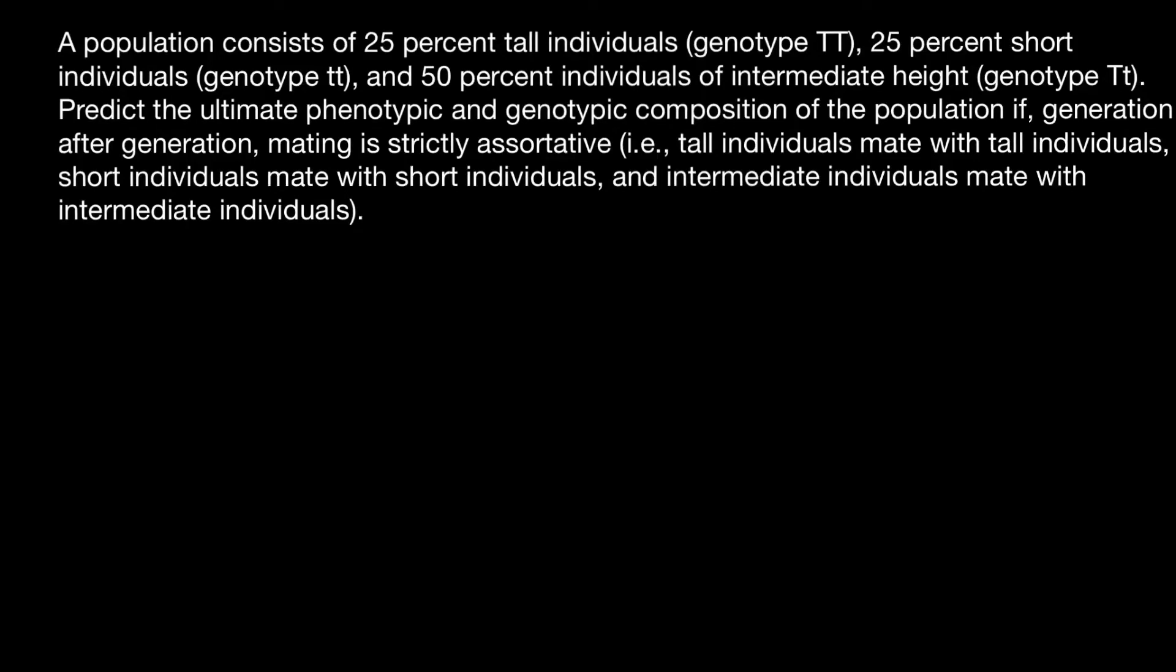Hello and welcome to Nikolai's genetics lessons. Today's problem is: A population consists of 25% tall individuals, genotype homozygous dominant TT, 25% short individuals, genotype homozygous recessive tt, and 50% individuals of intermediate height, genotype heterozygous Tt. Predict the ultimate phenotypic and genotypic composition of the population if generation after generation mating is strictly assortative, meaning tall individuals mate with tall individuals, short individuals mate with short individuals, and intermediate individuals mate with intermediate individuals.